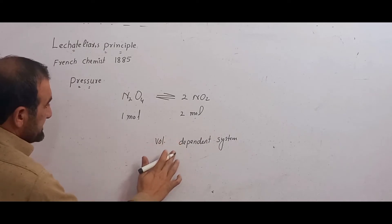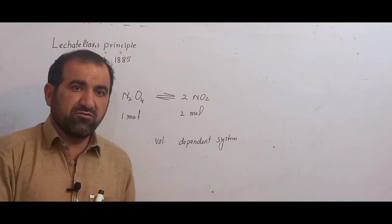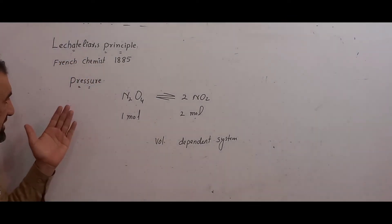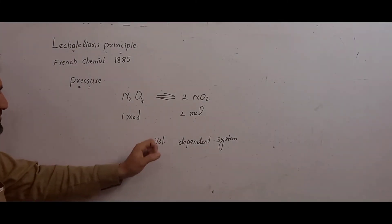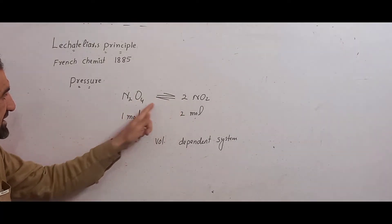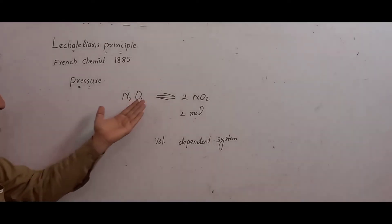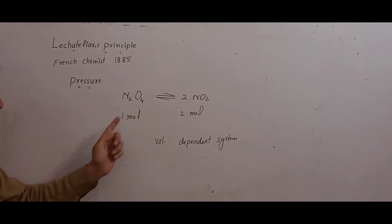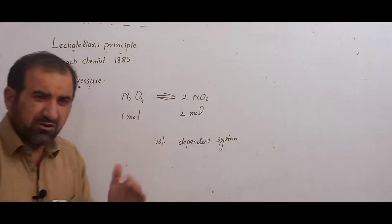If the number of moles of reactant and product differ — for example, 1 mole on one side and 2 moles on the other — then it is a volume-dependent system. According to Le Chatelier's principle, when pressure is increased, the system will shift from the side with more moles to the side with fewer moles.